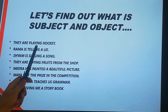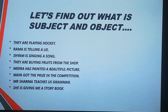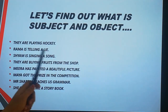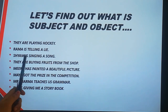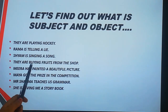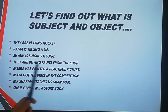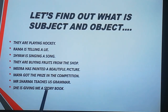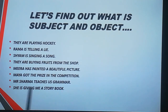Let's try to find out subject and object in these sentences: They are playing hockey. Ram is telling a lie. Sham is singing a song. They are buying fruits from the shop. Meena has painted a beautiful picture. Maya got the prize in the competition. Mr. Sharma teaches us grammar. And she is giving me a story book.